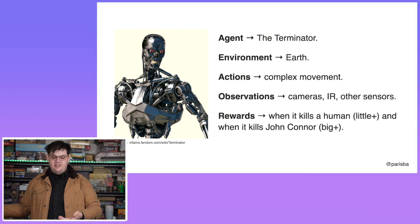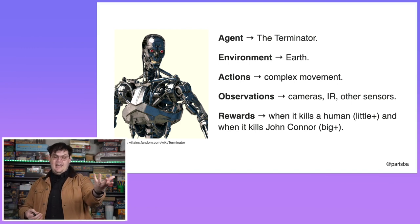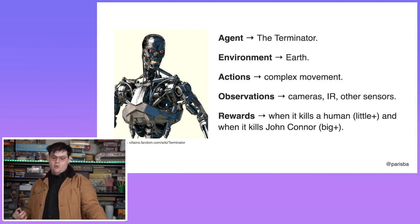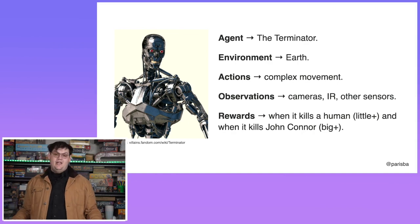You could break this down for all sorts of things. Here's a Terminator: its actions are all sorts of things, its observations are cameras and IR measurement systems, it gets a reward when it kills any human, and a big reward when it kills John Connor. Hopefully you understand now how we break down problems in machine learning for reinforcement learning.